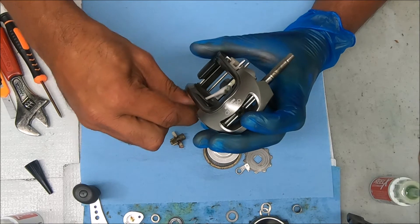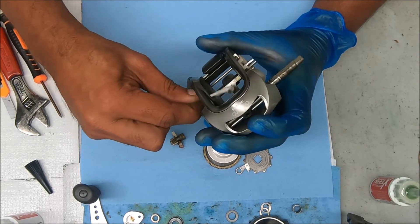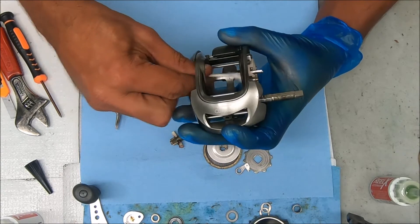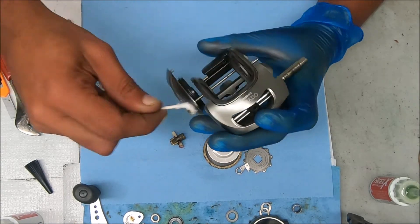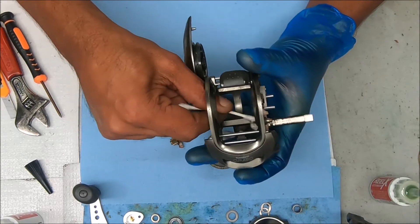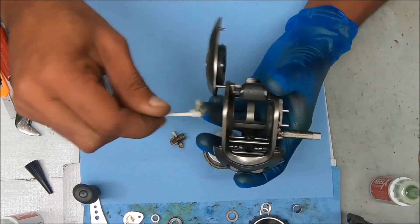Kind of clean out inside here. A lot of green stuff. A lot of it comes from your line depending on what you're using. This one I know looks like it was using some Power Pro green. But you also get it from the water.